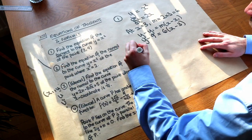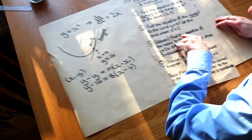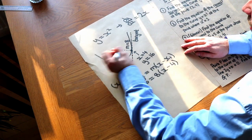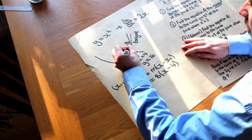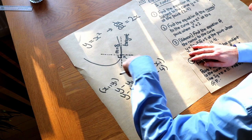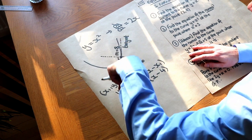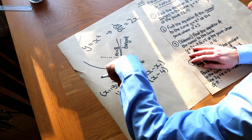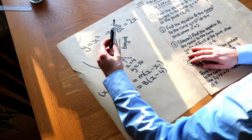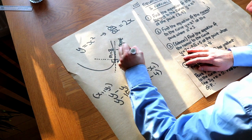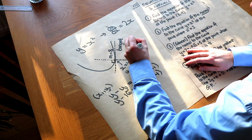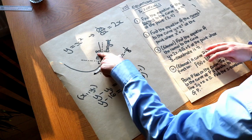Now, find the equation of the normal. The normal is the line which is perpendicular to the curve at that point — so it's perpendicular to the tangent. It's very easy to find. If the gradient of the tangent is 8, the gradient of the perpendicular line is just the negative reciprocal, which is minus 1 over 8. Remember: reciprocal means 1 over, and we negate it.